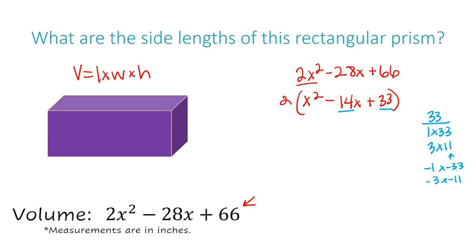Out of all four factor pairs, which gives negative 14? 1 plus 33 is 34 — too big. 3 plus 11 is positive 14 — right track but wrong sign. Negative 1 plus negative 33 is way off, so I cross that out. That leaves negative 3 plus negative 11, which gives negative 14. So the factors I'm going to use are negative 3 and negative 11.